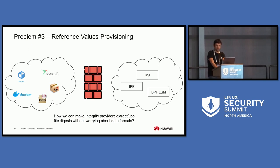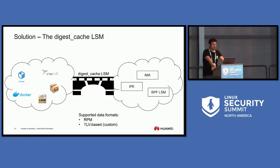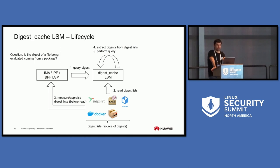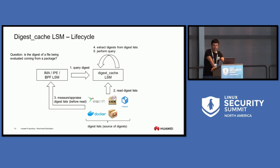The answer to how we can bring these two worlds together is the solution I developed called Digest Cache LSM, which currently supports the RPM format and a type-length-value based format. The integrity provider — IMA, IPE, or BPF LSM — wants to know if an accessed file belongs to a distribution package. They query the file digest to the Digest Cache LSM, which reads the package data sources measured by IMA/IPE/BPF LSM, extracts the digest cache from the packages, performs the query, and reports whether the file comes from the distribution.